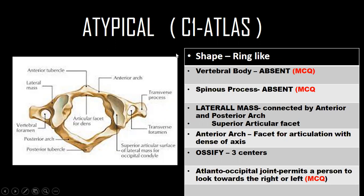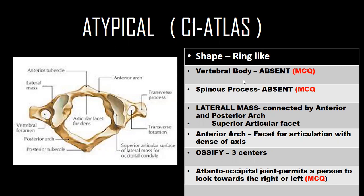C1 is called the atlas. If we look at it carefully, it looks like a ring — its shape is ring-like. The vertebral body is absent in the atlas, and there is no spinous process either. These are important exceptions that may come in your examinations, so remember these two points.